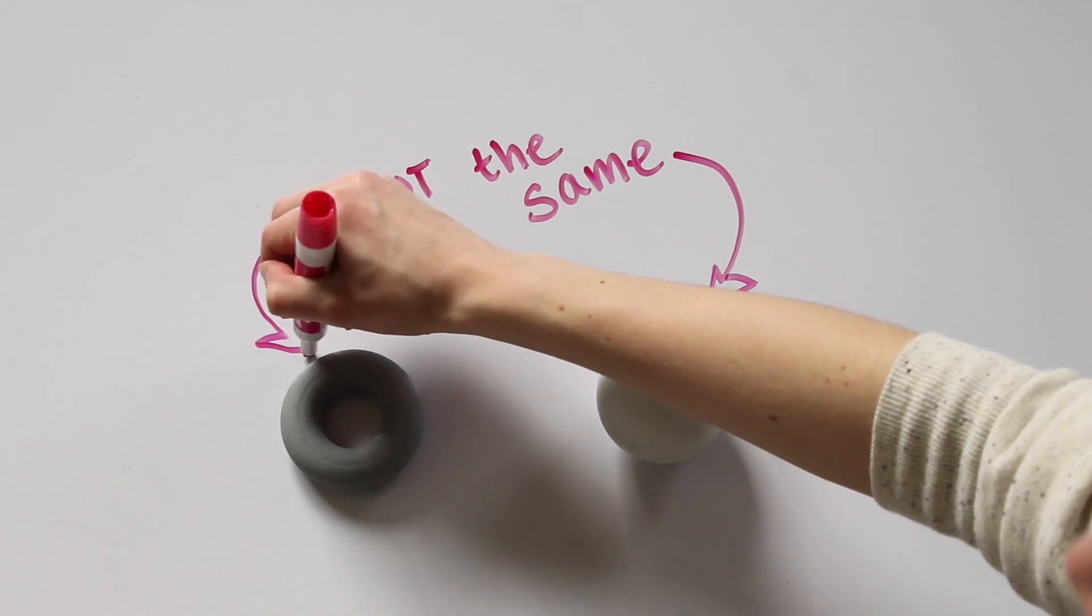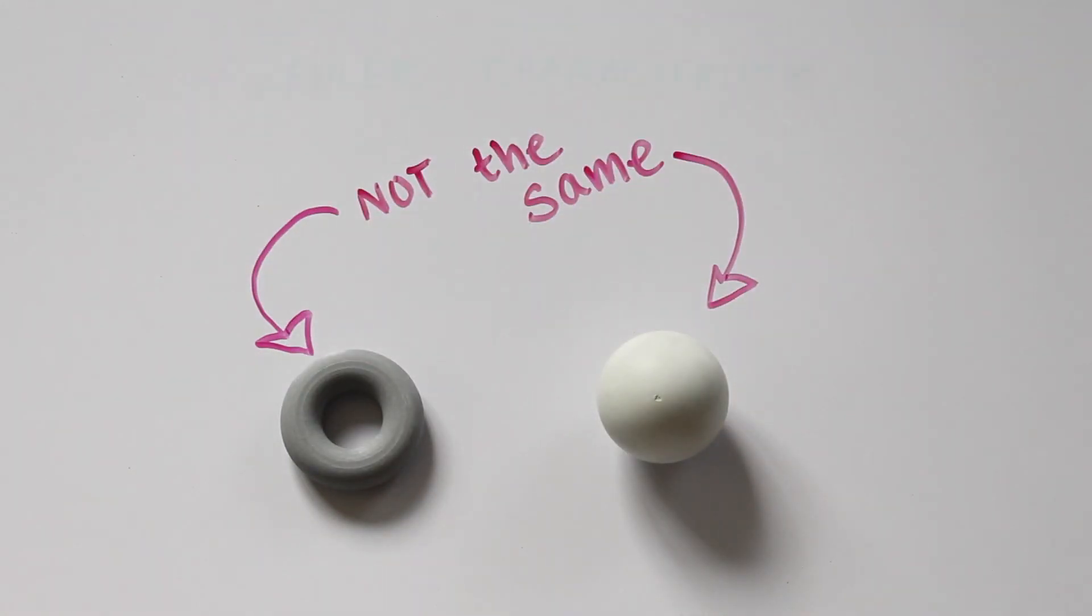We can quantify this difference with something called the Euler characteristic. This is a number we systematically assign to each shape. Two shapes are homeomorphic if and only if they have the same Euler characteristic.